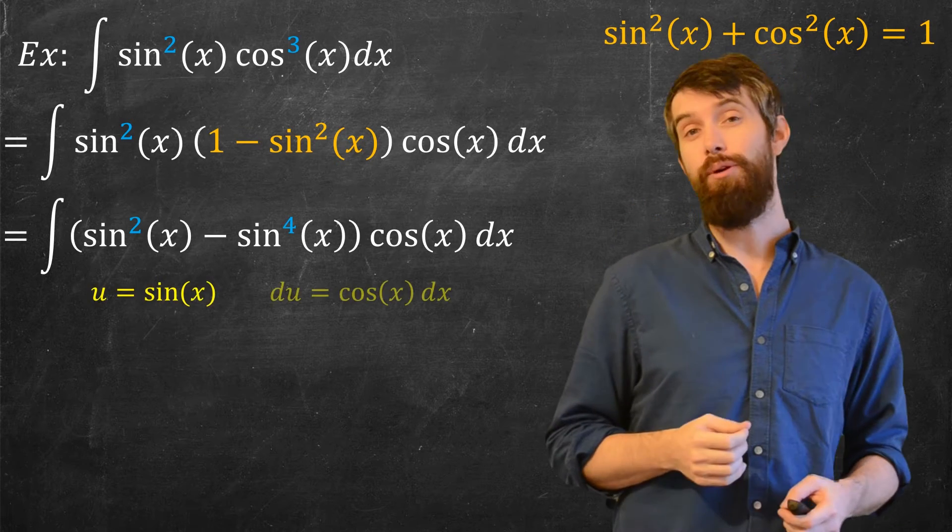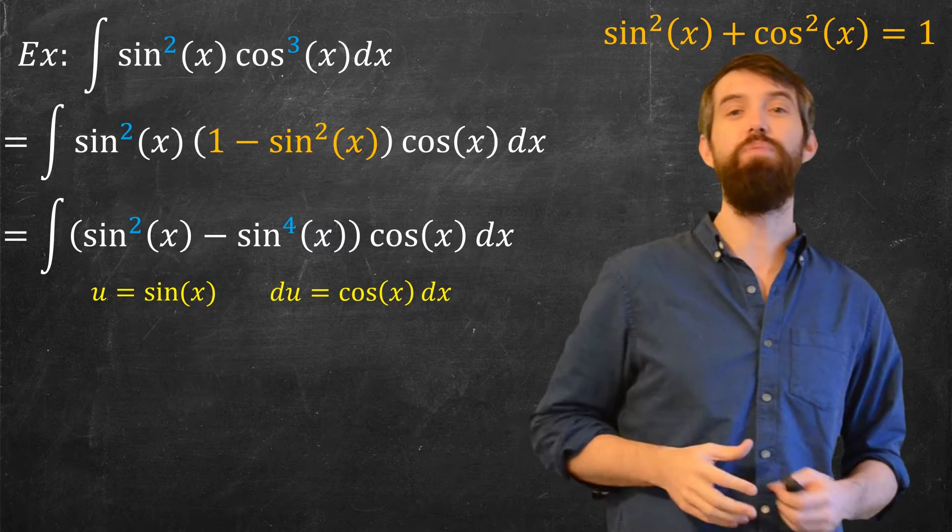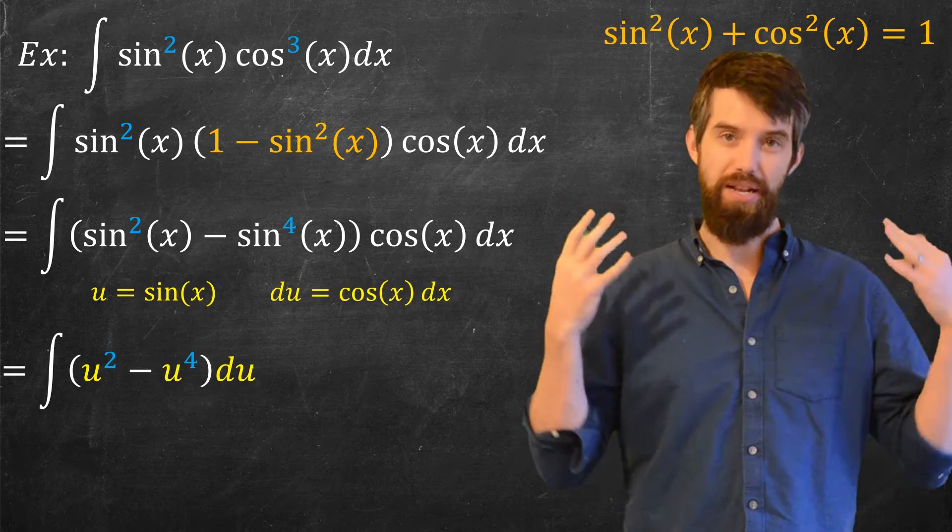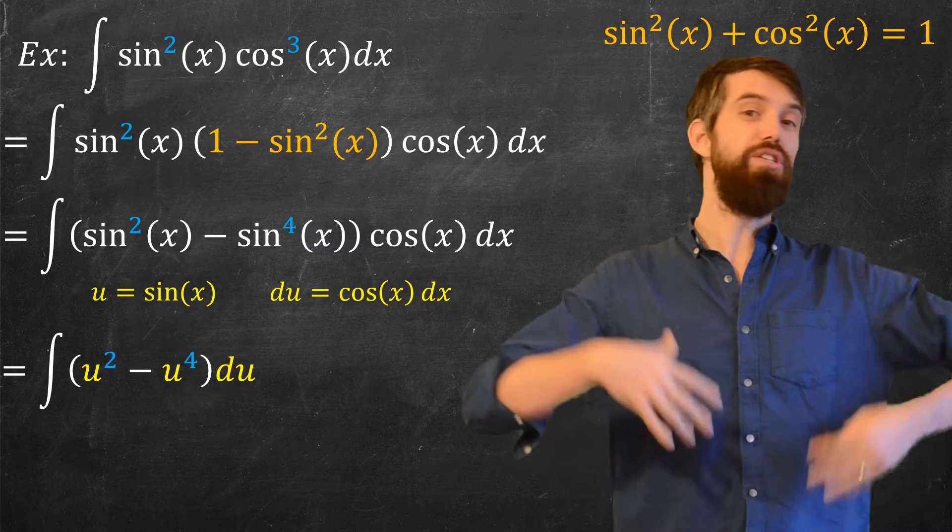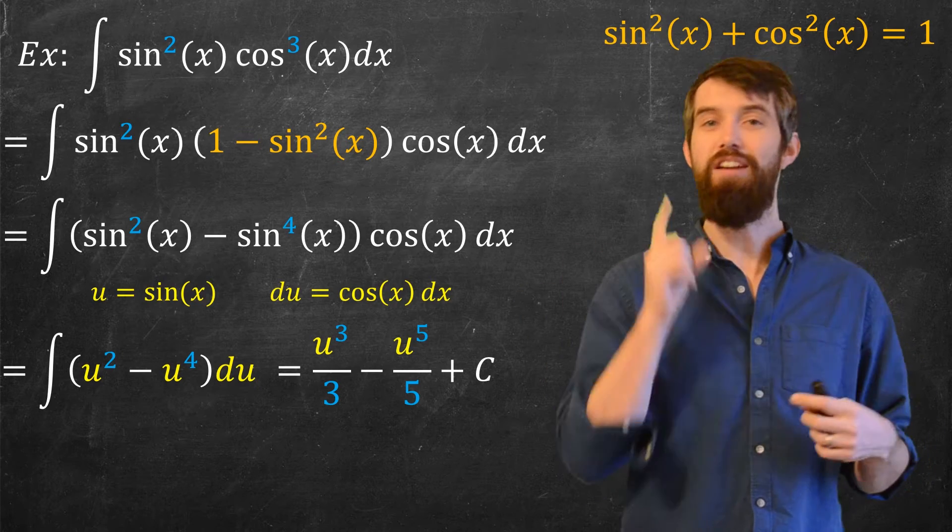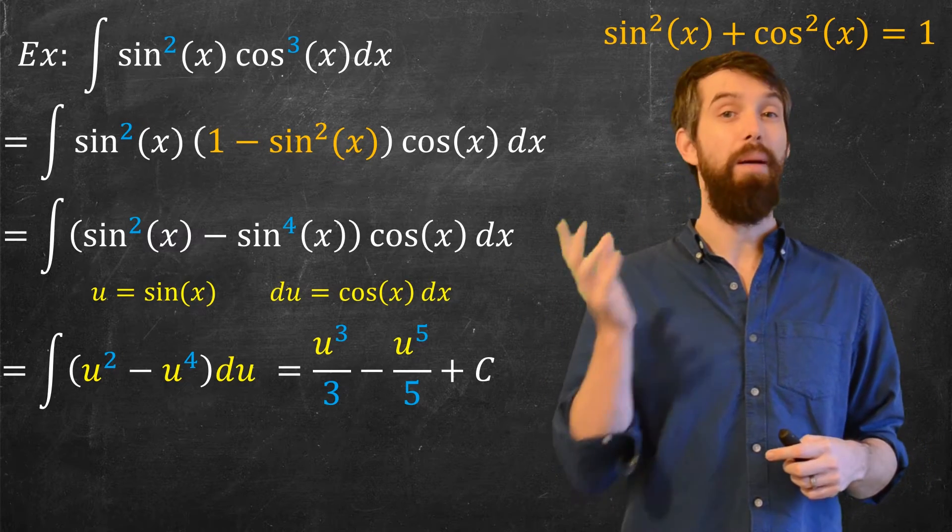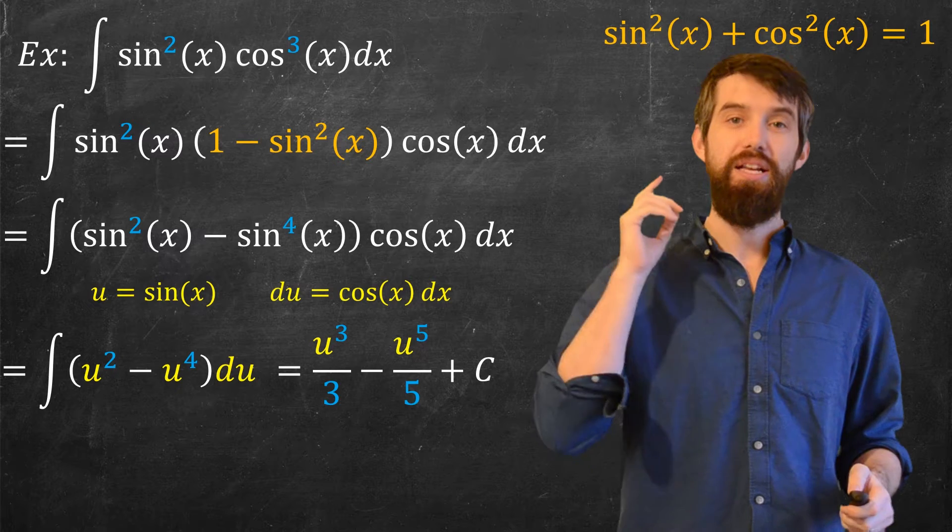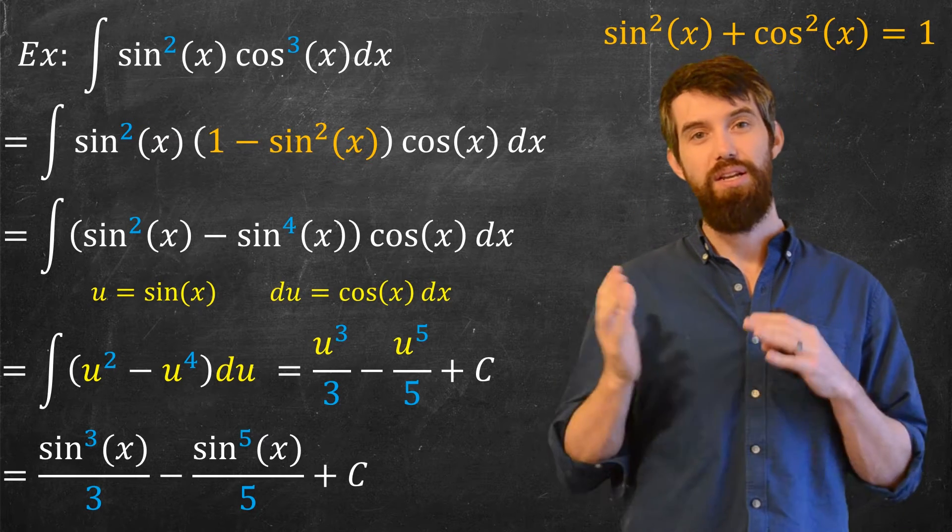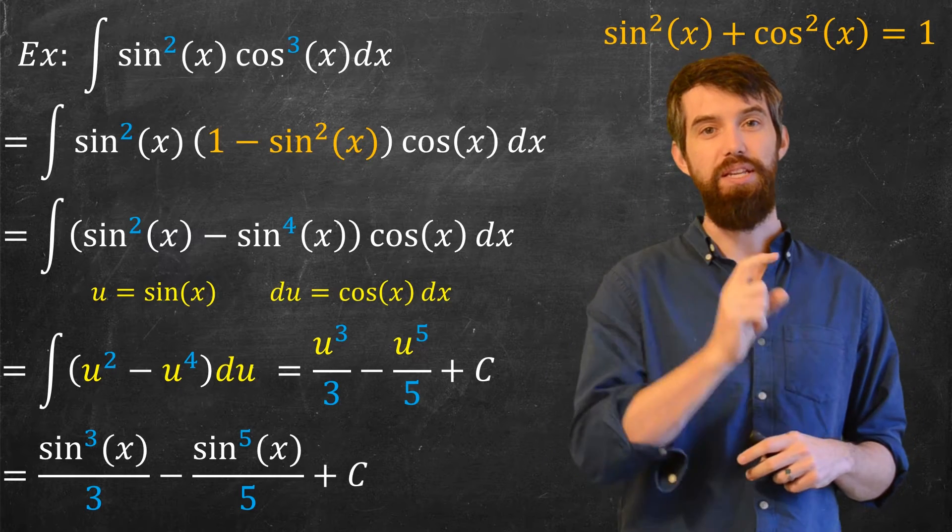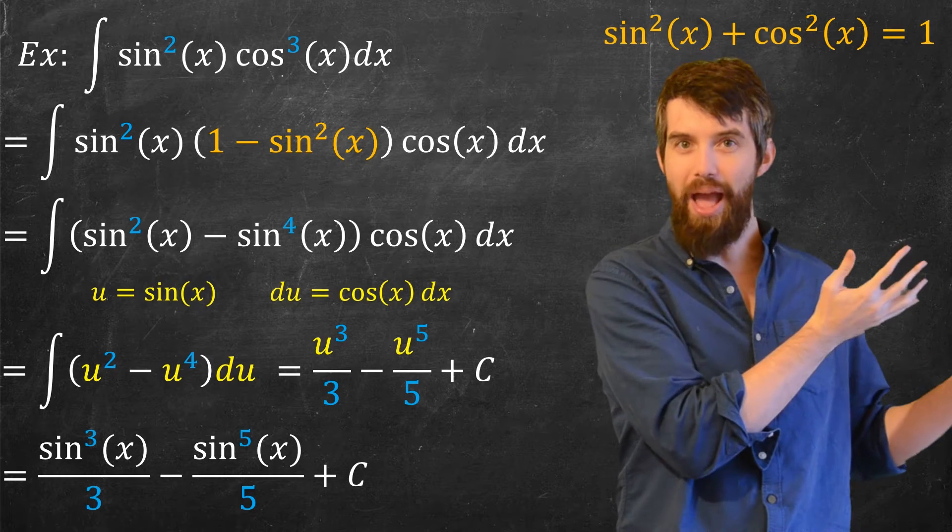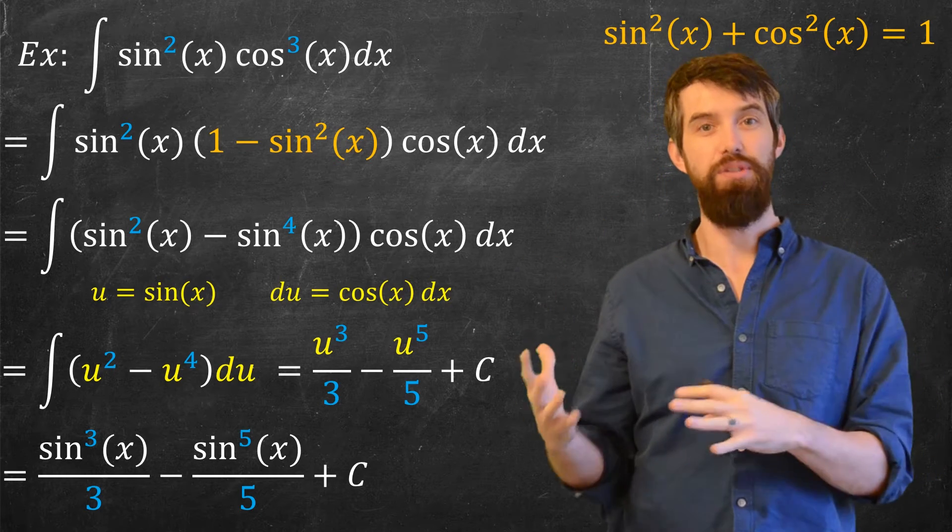And this is why it is so useful to have that cos of x. Because now I can set my u equal to sine. I can set my du to be cos of x dx. And in that case, I just get u squared minus u to the fourth du. Now this is just a polynomial—that's going to be u cubed over 3 minus u to the fifth over 5 plus c. And when I substitute back in, taking that u equal to sine of x, I get sine cubed of x divided by 3 minus sine to the fifth of x divided by 5 plus c. So in other words, this is basically just do a Pythagorean identity in a clever way so that I can do my u-substitution.